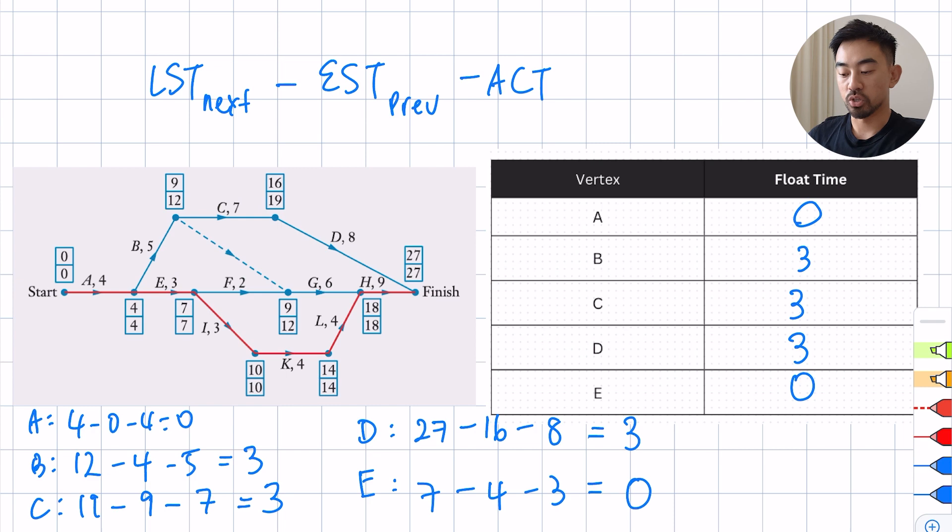So pretty straightforward. Just remember this formula: latest of next minus earliest of previous minus the activity and you'll always get the correct answer. All right, short video today. Hope you enjoyed it. I'll see you in the next one. Peace.